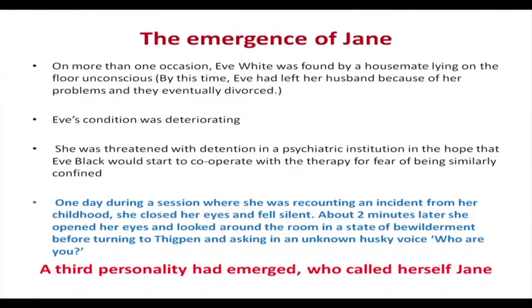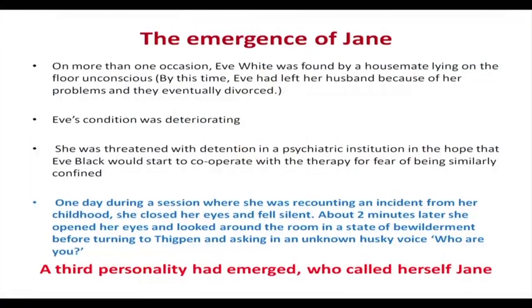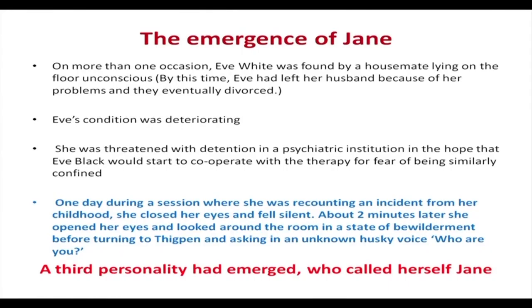It was very clear that Eve's condition was deteriorating. One day during a session, while recounting an incident from her childhood, she closed her eyes and fell silent. About two minutes later she opened her eyes, looked around the room, and before turning to Dr. Thigpen asked in a very husky voice, 'Who are you?' This was the emergence of the third individual — she called herself Jane. So now we have Eve White, Eve Black, and Jane.